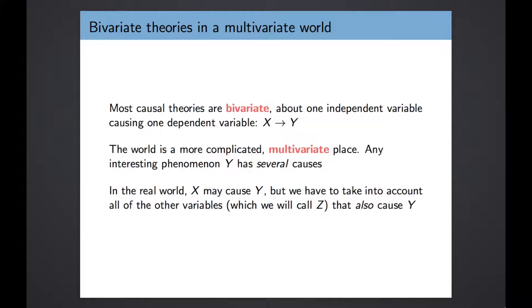In reality, of course, the world is a much more complicated place than that. Outcomes like voter turnout are affected by many, many variables, not just one that we might identify in our causal theory. So how do we understand bivariate theories in this multivariate world that we live in?